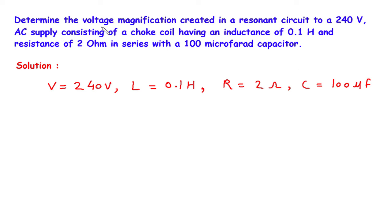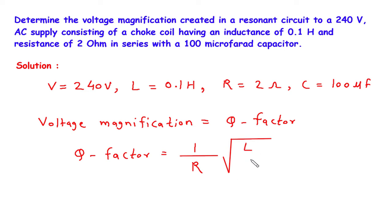What we have to find, we have to find voltage magnification. In case of series RLC circuit voltage magnification is equal to quality factor. Voltage magnification equals Q factor and Q factor equals 1 upon R under root L by C.